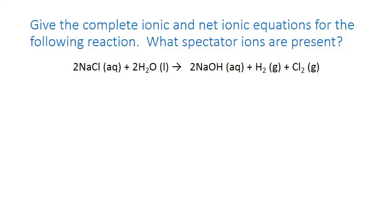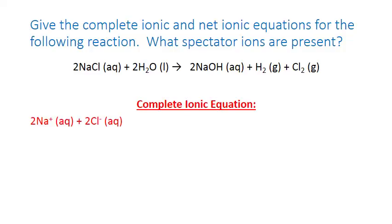Starting with sodium chloride: sodium is a metal in column 1 of the periodic table, so it forms a +1 ion. Chloride is a non-metal in column 17, forming a −1 ion. So when we break NaCl apart, we have Na⁺ and Cl⁻. We include two of each ion to reflect the coefficient of 2 from the balanced equation. Next, liquid water is a molecular substance, so we write its molecular formula as is.